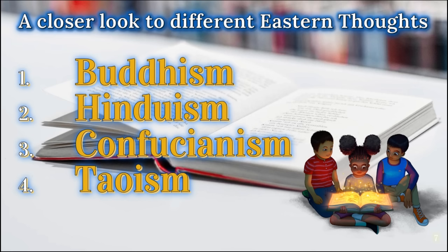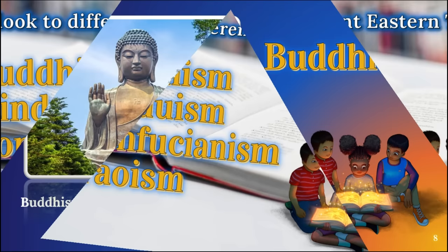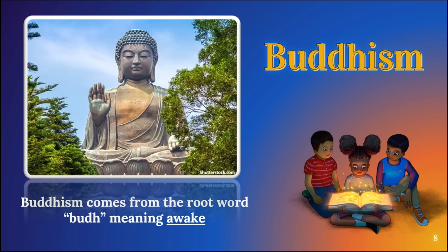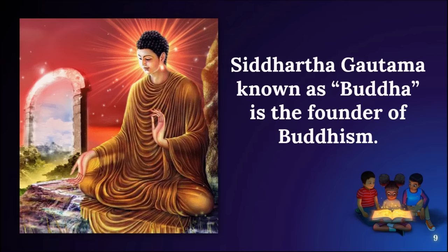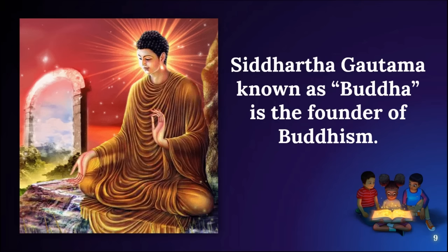We will now take a closer look at four eastern religions, because in eastern thought, concepts of understanding the self are usually related to religion. The four religions are: Buddhism, Hinduism, Confucianism, and Taoism. Buddhism comes from the root word 'bud' meaning 'awake' — implying that when the eyes are open, it leads to greater understanding of the self and the world. The founder of Buddhism is Siddhartha Gautama, known as Buddha.